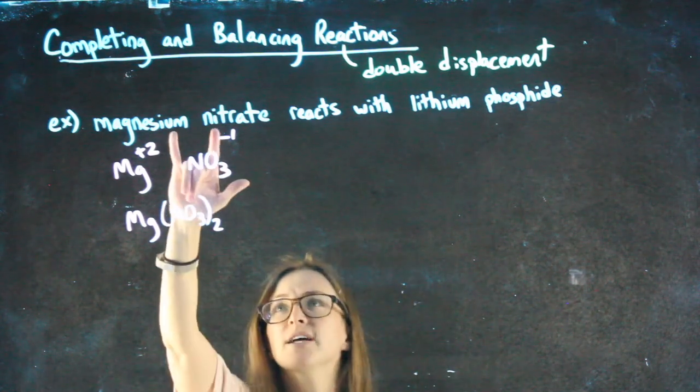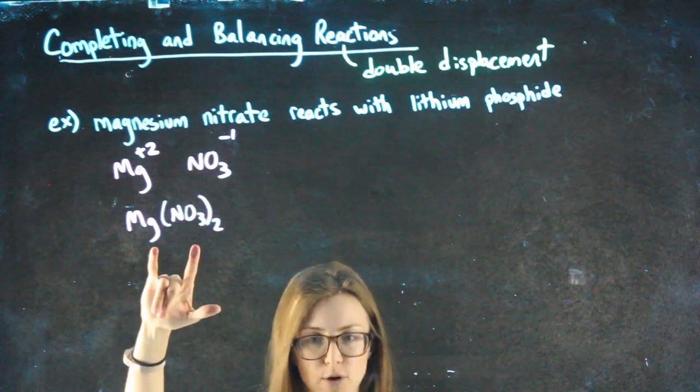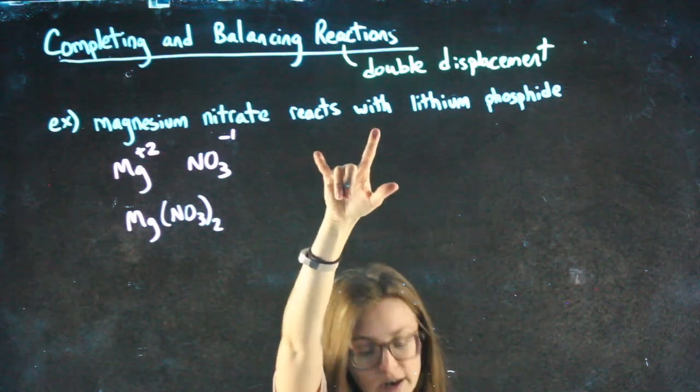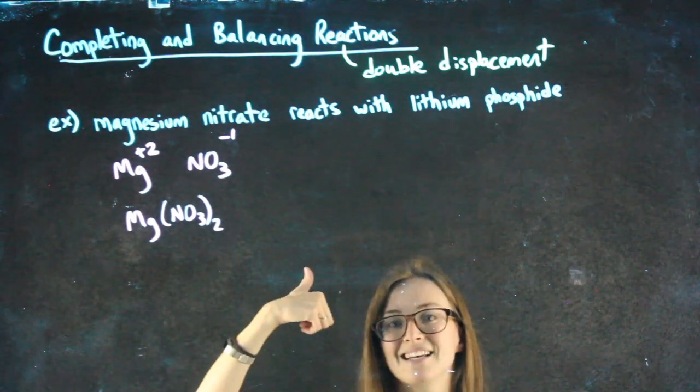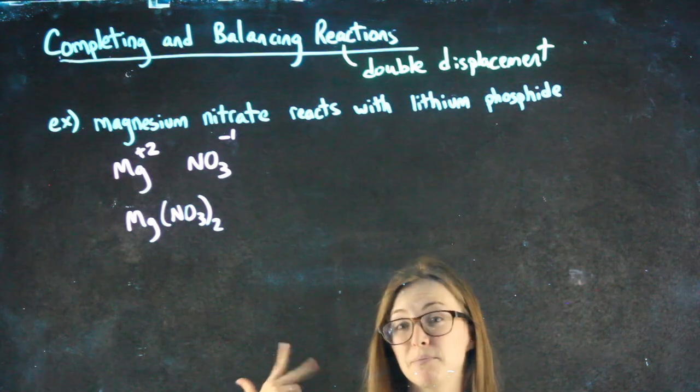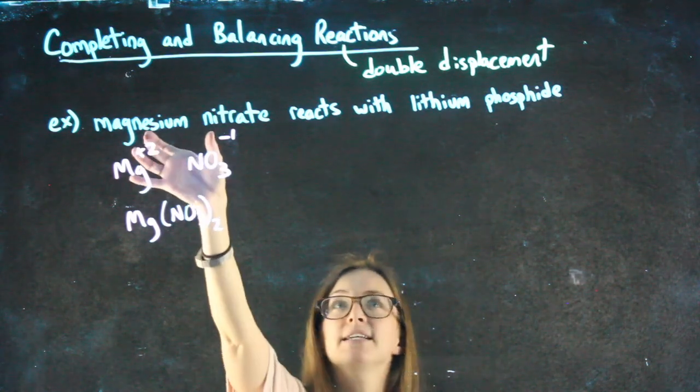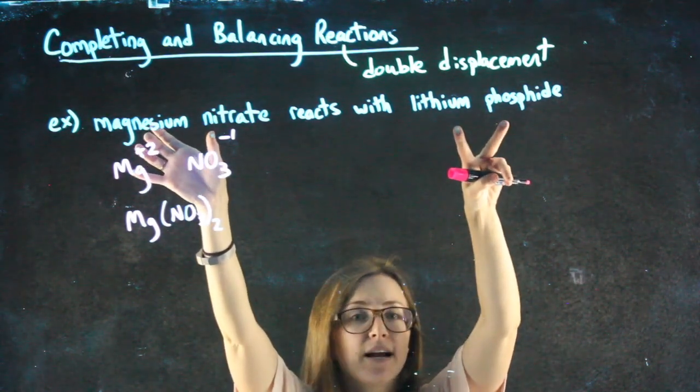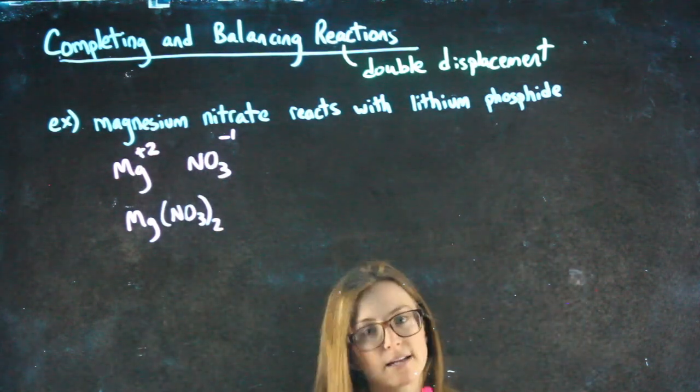So that's this magnesium nitrate, which I wrote out, reacts with. Now it might say reacts with, it might say is added to, it might just have a plus sign. Some way of telling us that magnesium nitrate and lithium phosphate are going to react in a chemical reaction.